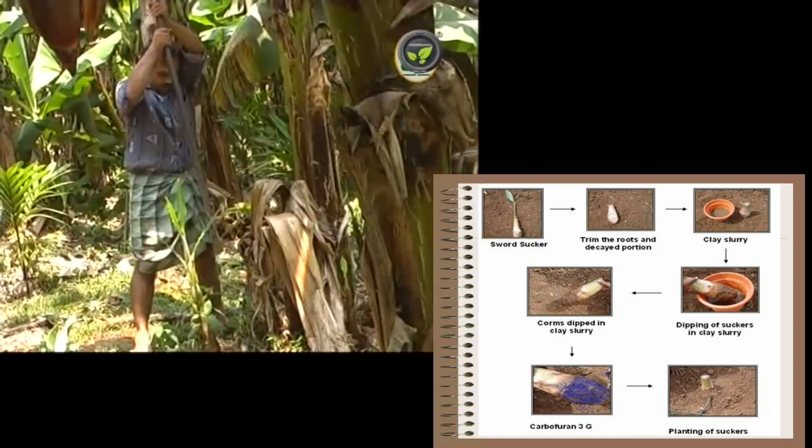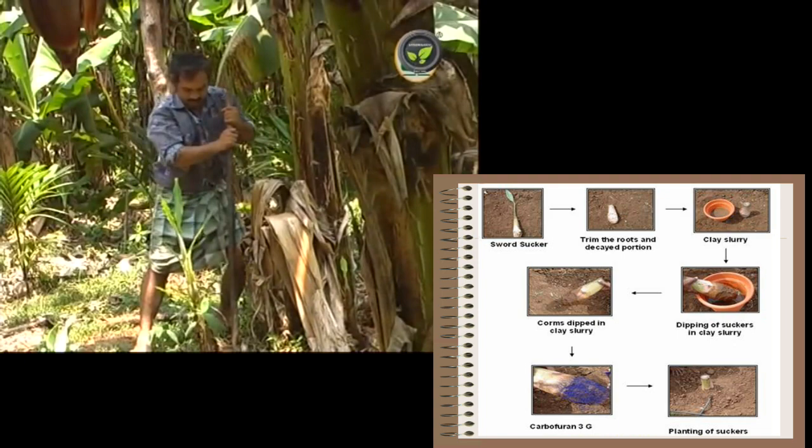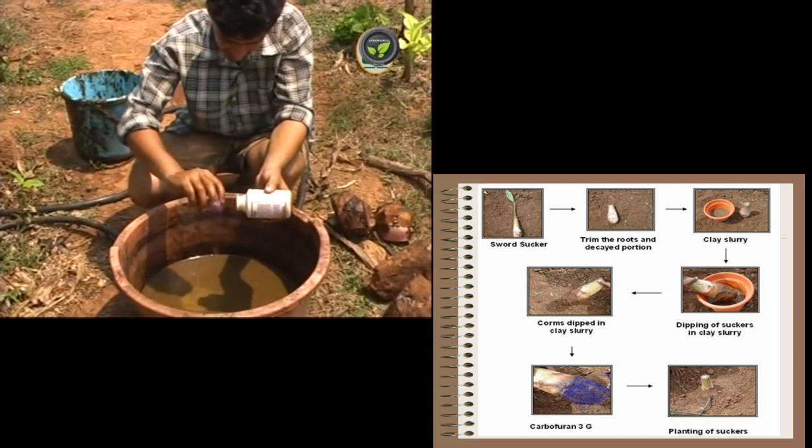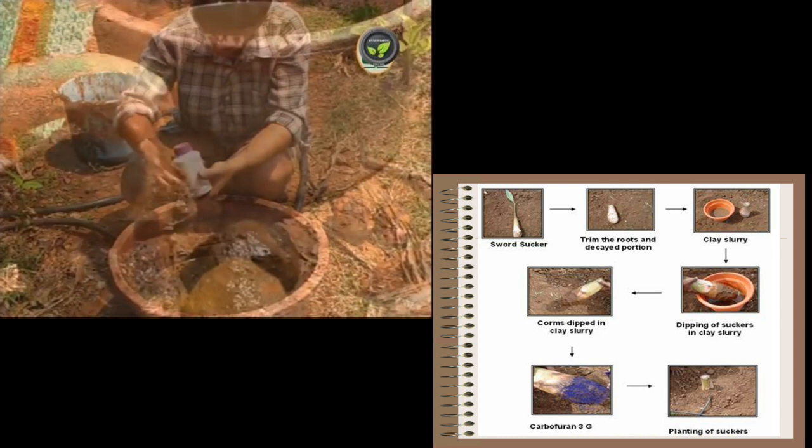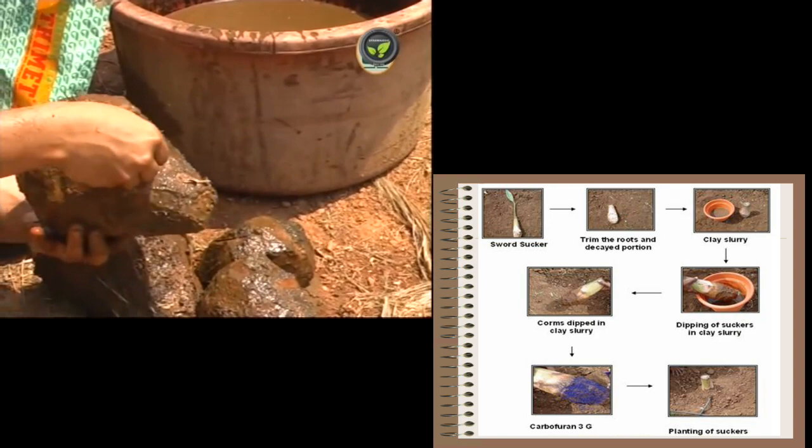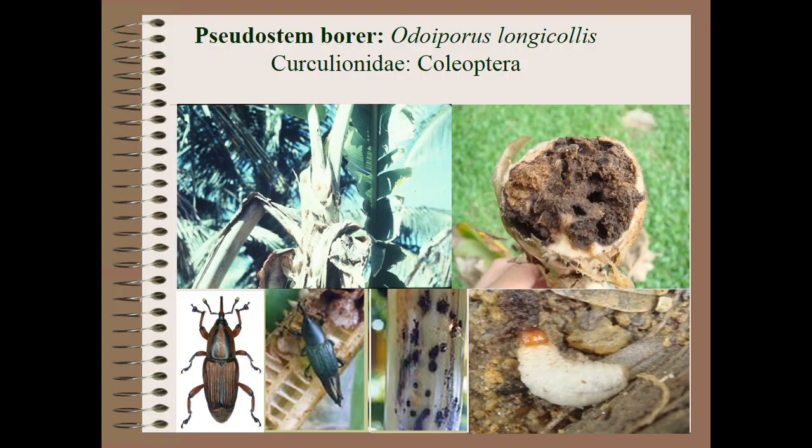What is the pralineage method? Here, use the split sucker for this method. Trim the roots and decayed portions. It should be mixed with clay slurry. Both corms and suckers are dipped in clay slurry with carbofuran 3G chemical, and then we can go for planting of suckers.